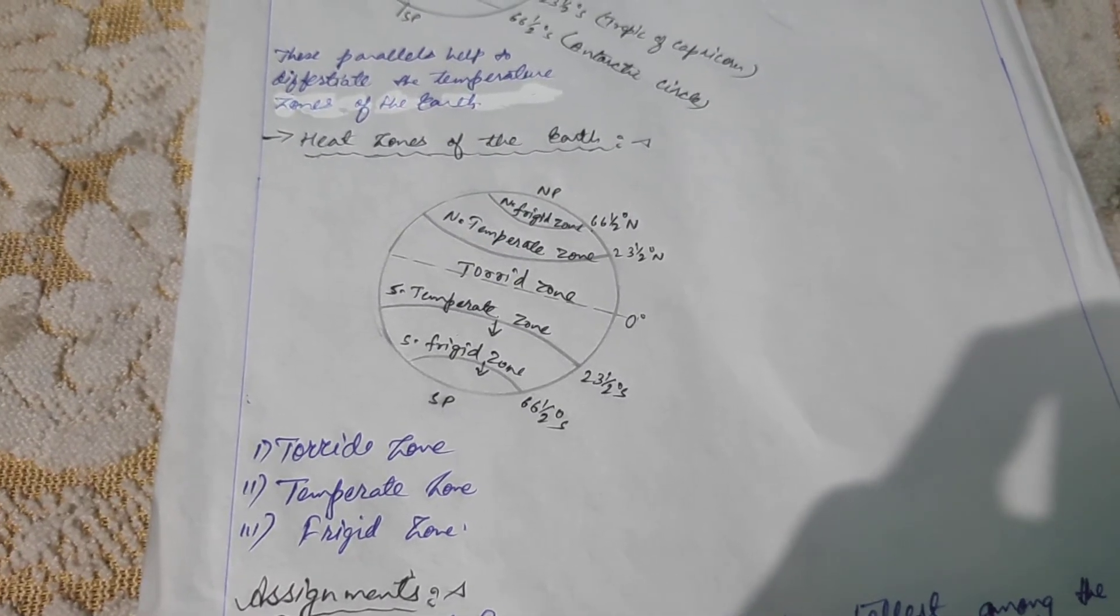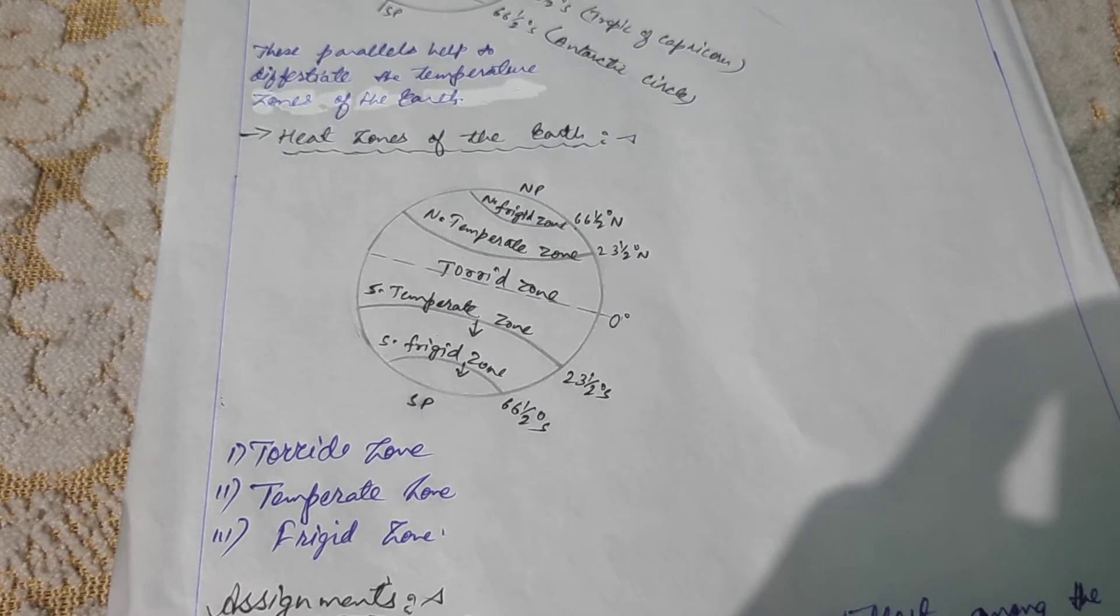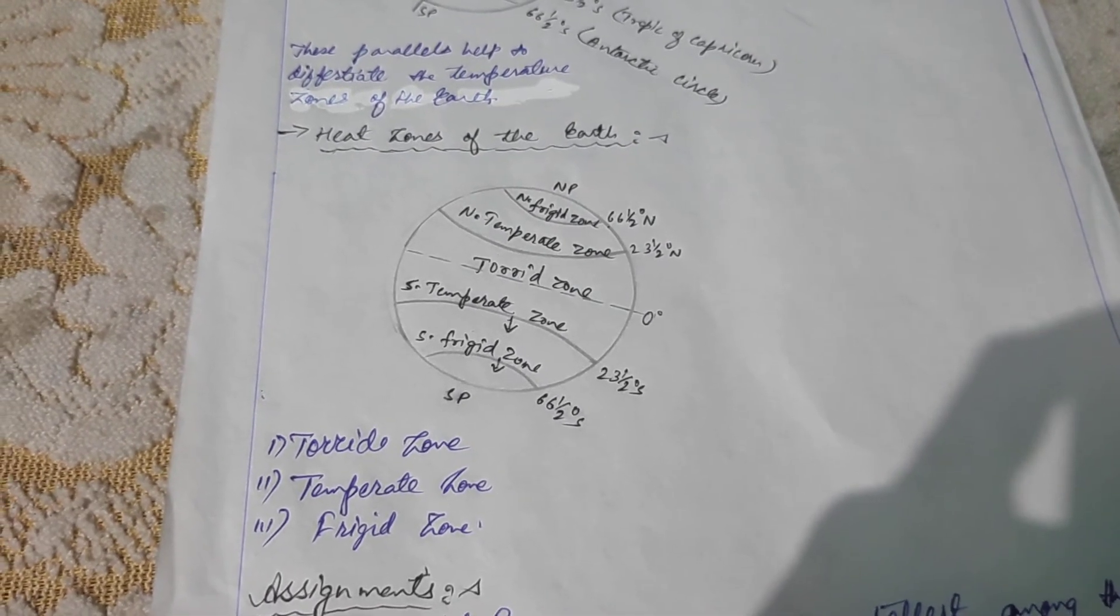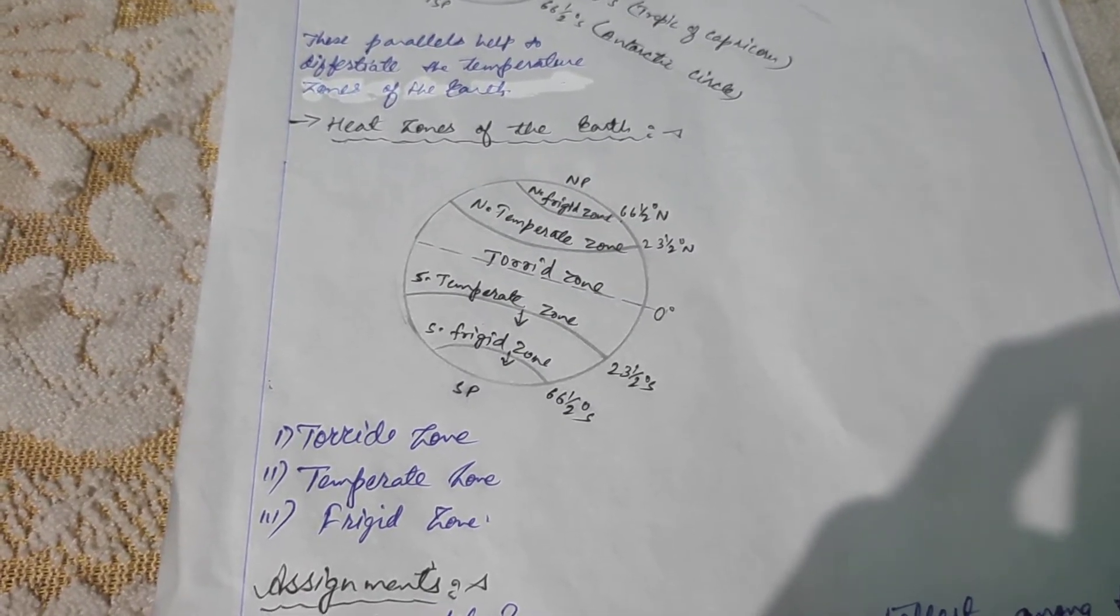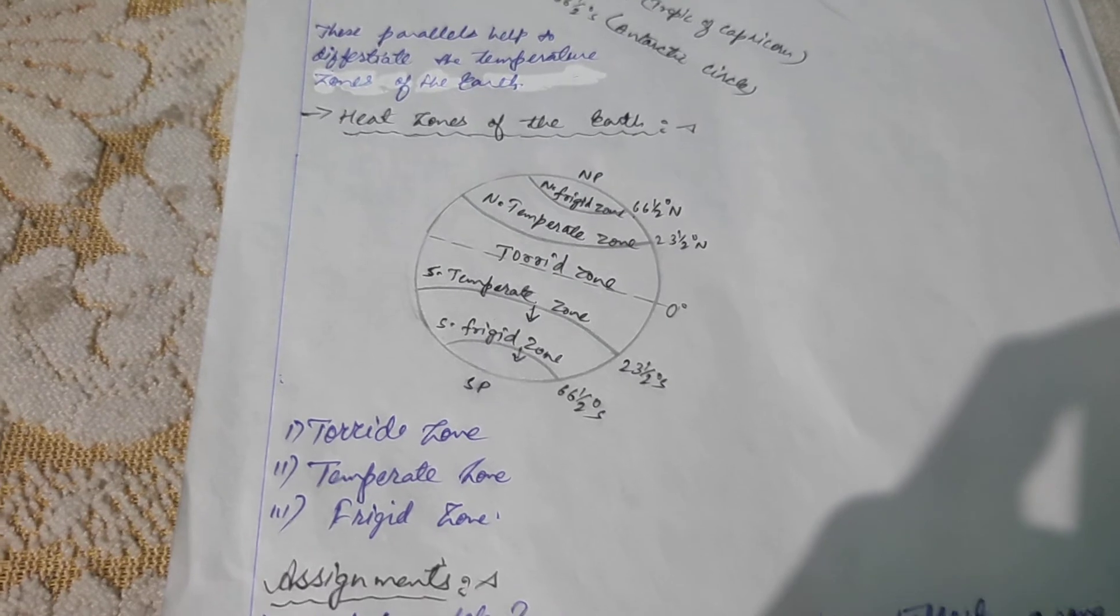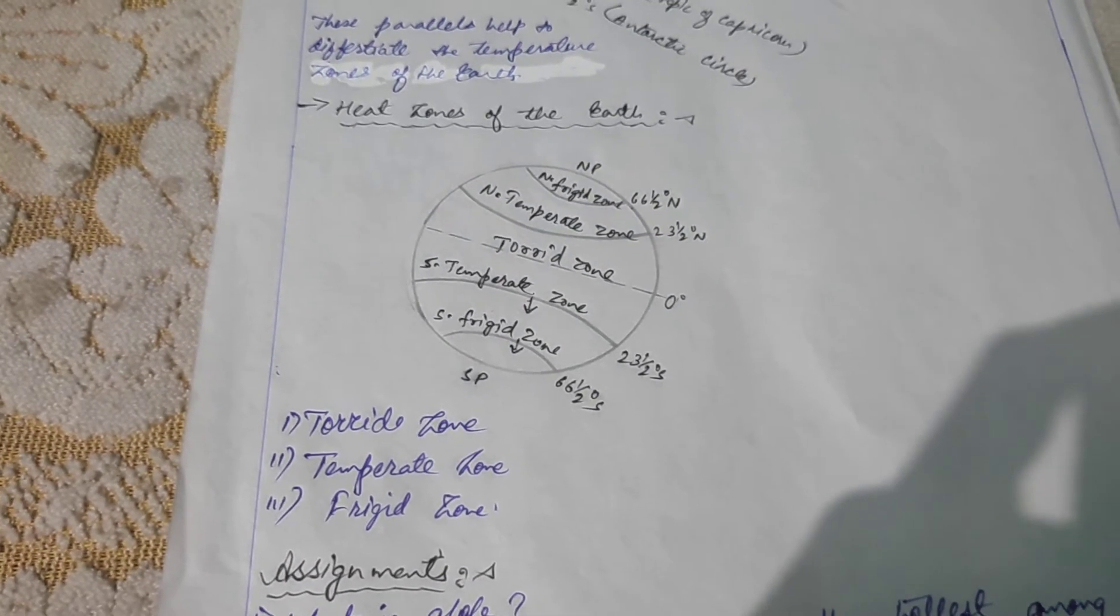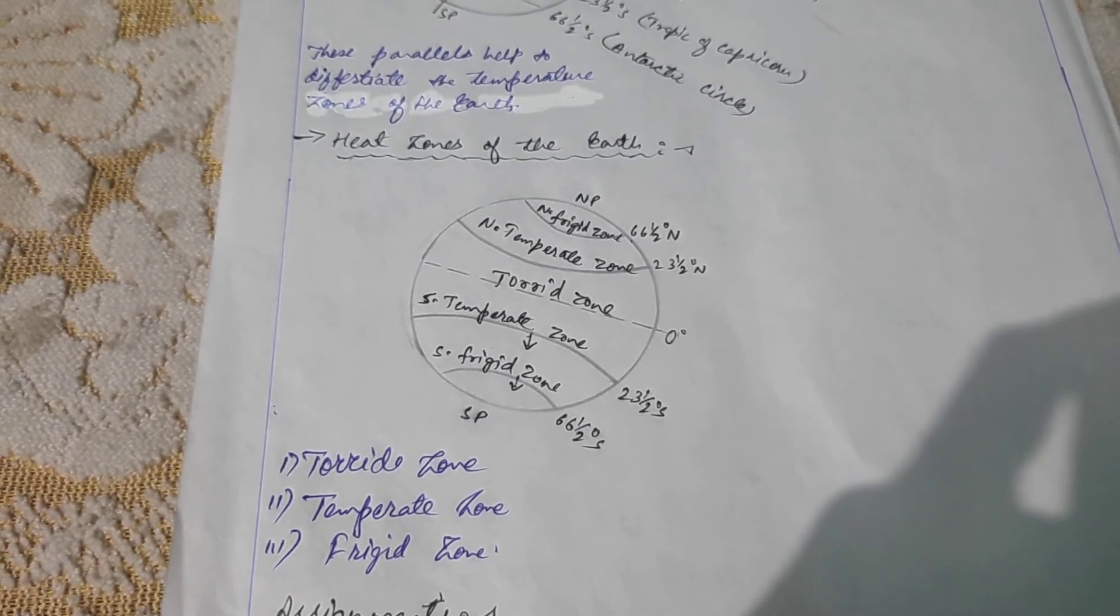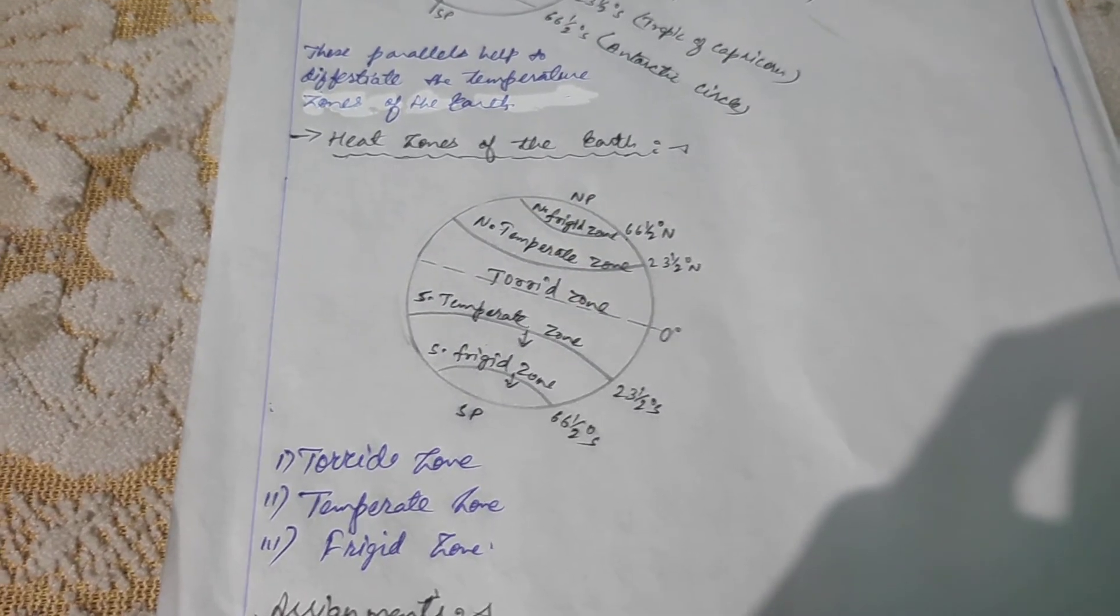The first and foremost zone is torrid zone. As the earth revolves around the sun, due to the tilted nature of the earth's axis, the sun appears to move between the tropic of Cancer and the tropic of Capricorn. As this latitude gets the direct rays of the sun, this is the hottest zone. This zone is known as the torrid zone or we can also say it as tropical zone.